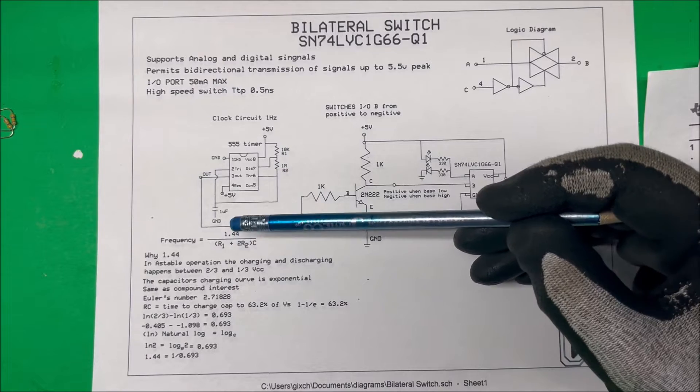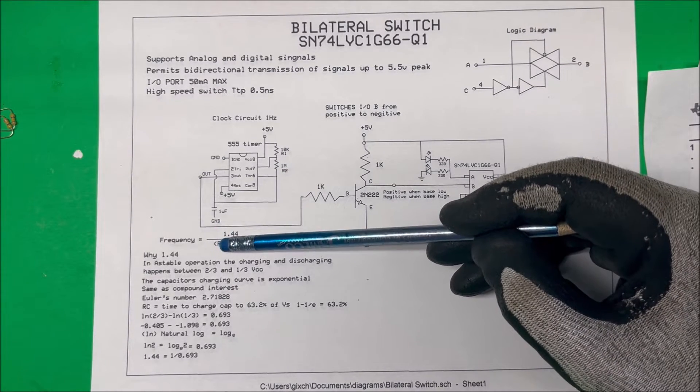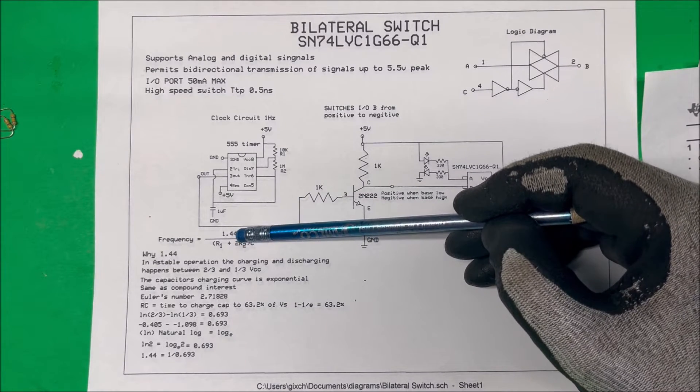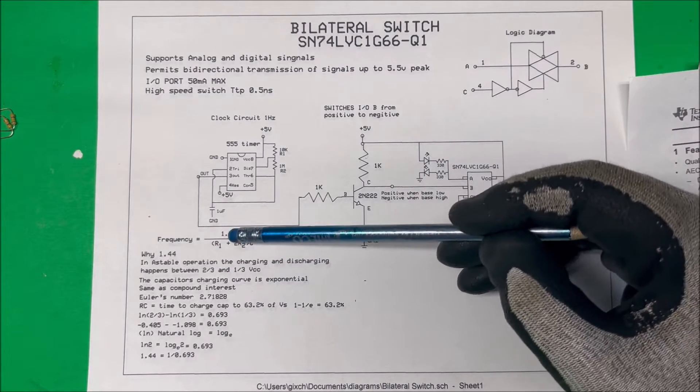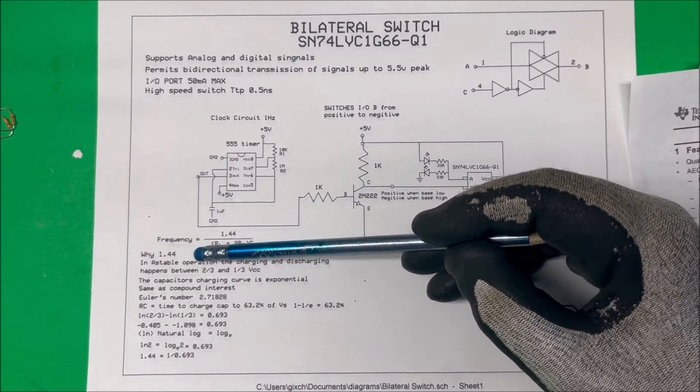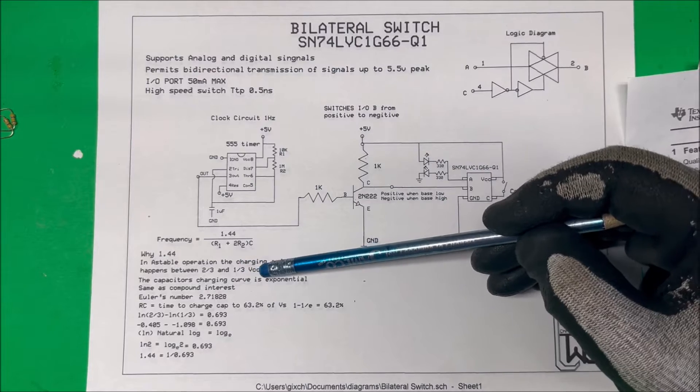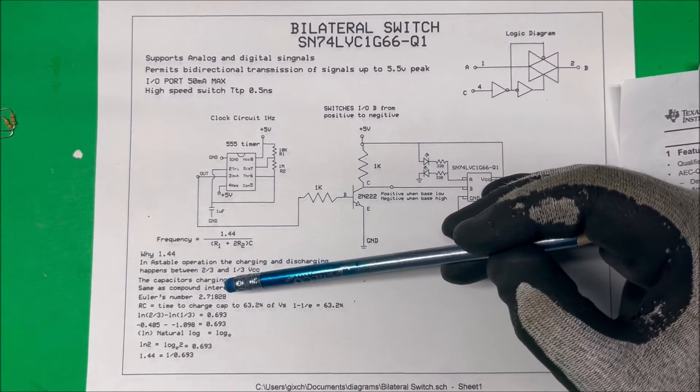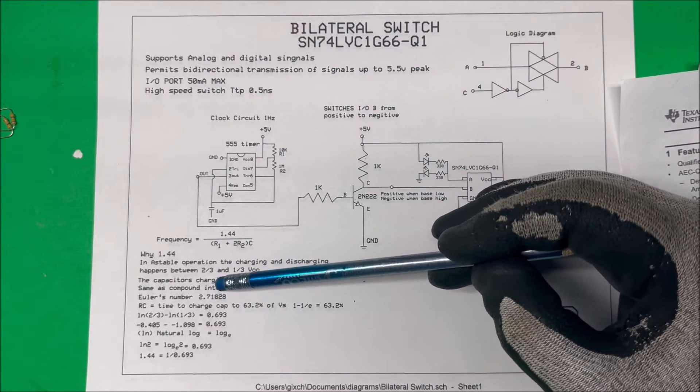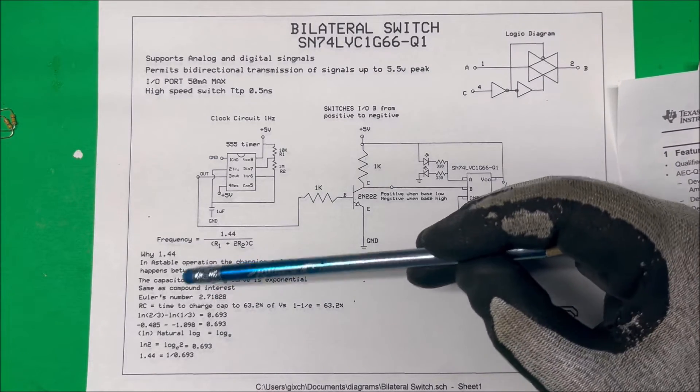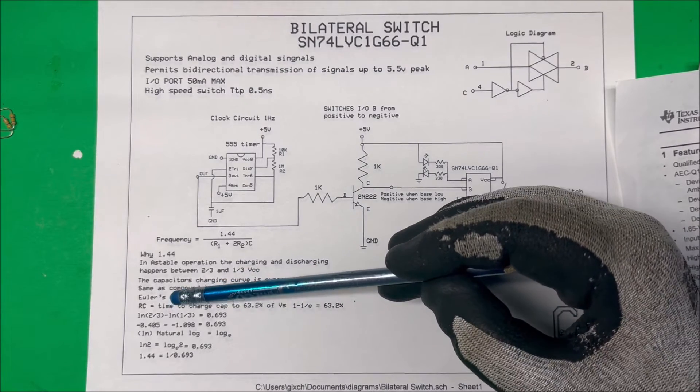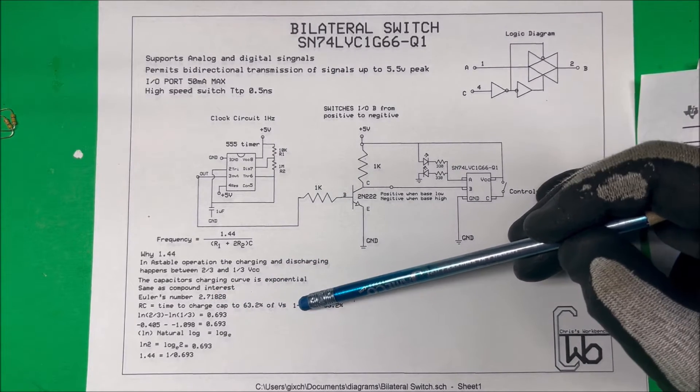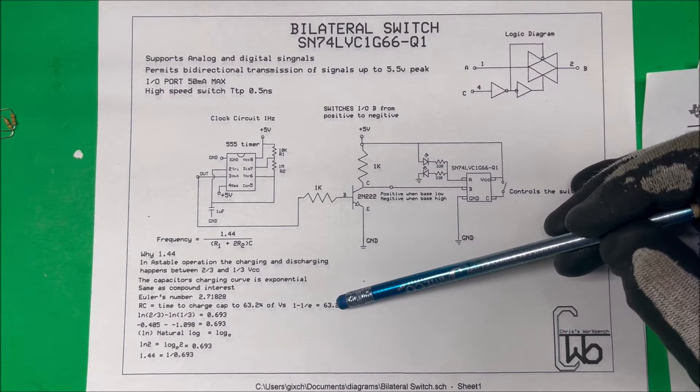The frequency is going to be equal to 1.44 divided by (R1 plus two times R2) times the capacitance. We use these numbers all the time—it's kind of nice to know where they come from. In a stable operation, the charging and discharging happens between two-thirds and one-third VCC. The capacitor charging curve is exponential, the same as compound interest, and Euler came up with a number for that of 2.71828, which goes on forever—it's an irrational number. The RC time constant is the time to charge the cap up to 63 percent, or 63.2 percent. They got that by taking one minus Euler's constant divided into one, which comes up to 63.2 percent.